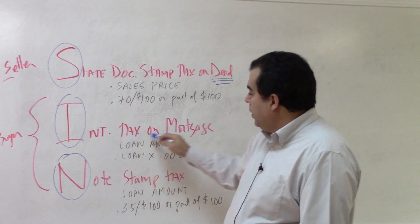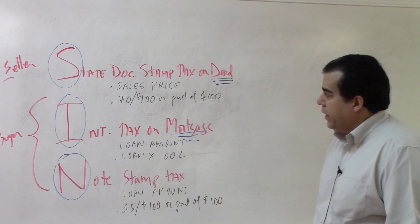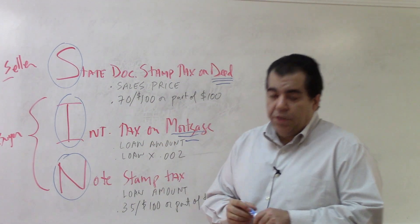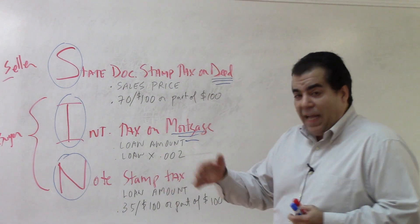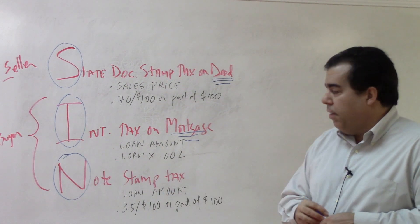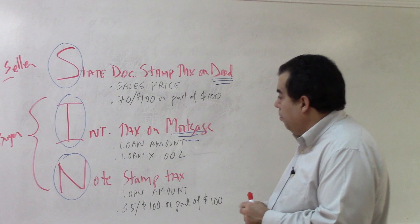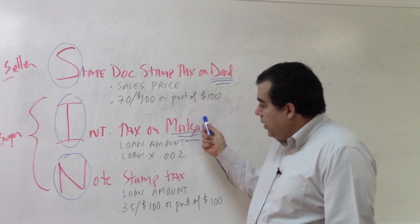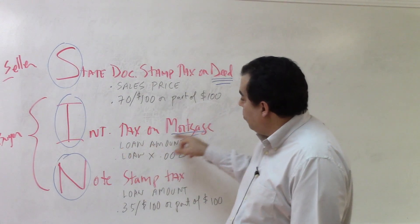Then we have the intangible tax on the mortgage. The mortgage is the document you use to pledge the property as collateral to the lender, giving them lien rights in Florida. It allows a lender to foreclose against your property if you don't pay or otherwise default. Since the mortgage has to do with the loan, you use the loan amount to calculate this tax.